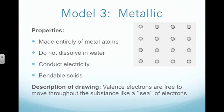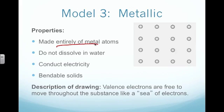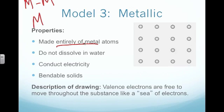The third model we looked at was metallic bonds. Metallic bonds are made entirely of metal atoms. I would see either a metal attached to a metal, or just a metal by itself. For example, a giant piece of iron is going to be made up of simply iron attached to iron — all metal atoms. Metals tend not to dissolve in water. They do conduct electricity very, very well, and they tend to be very bendable solids.